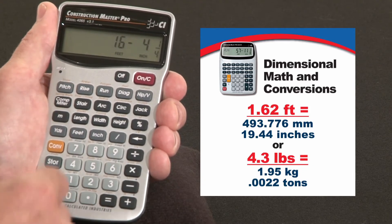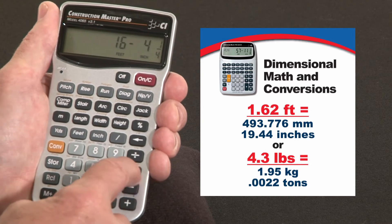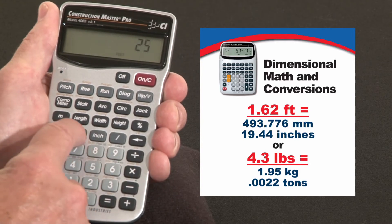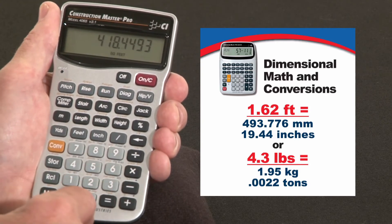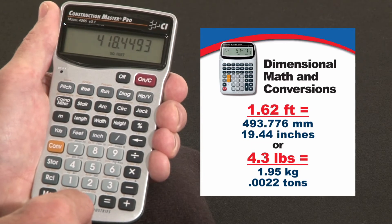Or multiply. Say that's one side of a pad we want to pour. By twenty-five feet seven inches. There's our square footage. Square area.